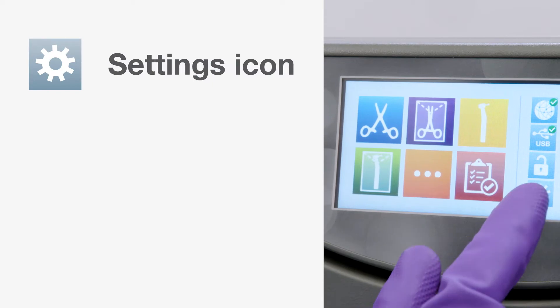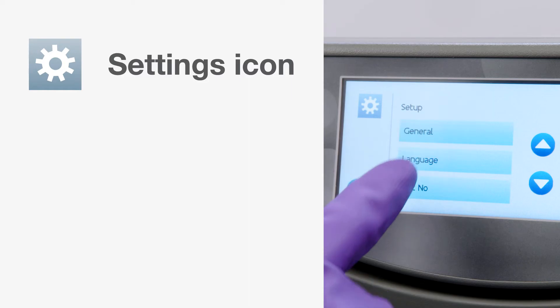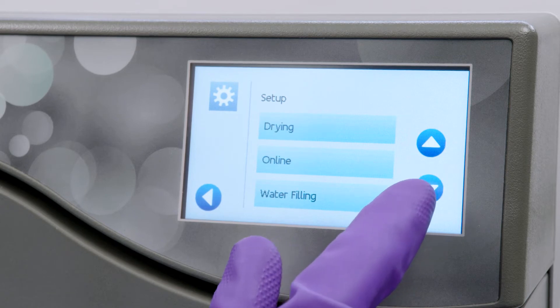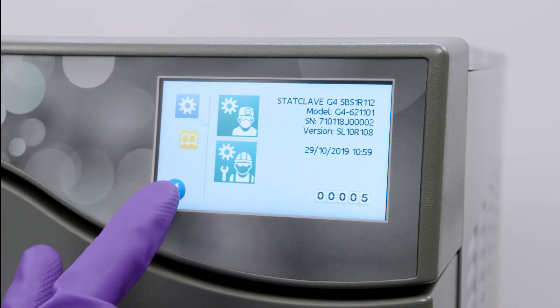The final icon is the settings icon, which allows you to adjust the user settings menu. Features such as setting up load traceability, user IDs and pins, setting drying times and standby mode are helpful features explained in detail in your operator's manual.